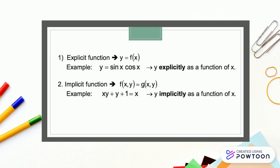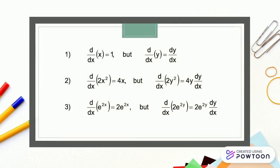Example 1: When we differentiate x with respect to x, we get 1. But when we want to differentiate y with respect to x, we need to apply the chain rule method, which gives us dy/dx.